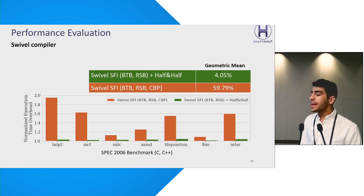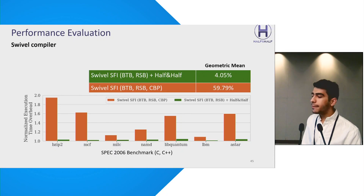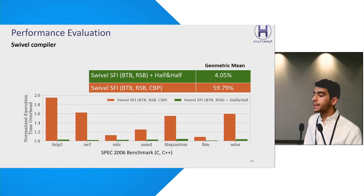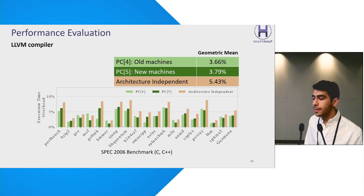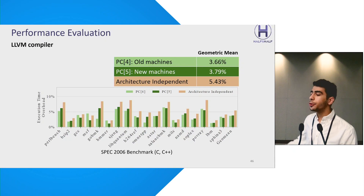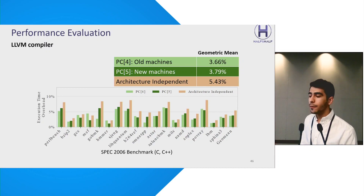For the performance evaluation, we replaced the SWIVEL compiler's CBP mitigation with Half-and-Half and observed a substantial reduction in overhead. While SWIVEL incurred an average execution time overhead of 59%, Half-and-Half resulted in only about 4% overhead. For the LLVM compiler, we have three configurations: partitioning bit 4 for older processors, partitioning bit 5 for newer processors, and partitioning both bits for architecture-independent backward compatibility. In all scenarios, the geometric mean overhead was less than 5.4%.